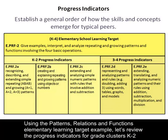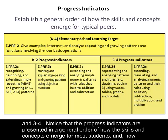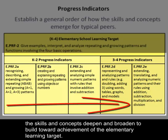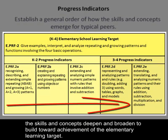Using the Patterns, Relations, and Functions Elementary Learning Target example, let's review the progress indicators for grade clusters K-2 and 3-4. Notice that the progress indicators are presented in a general order of how the skills and concepts emerge for most students, and how the skills and concepts deepen and broaden to build toward achievement of the elementary learning target.